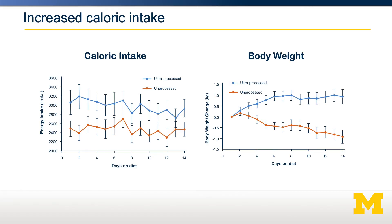We can make some projections, but until a longer-term study is done, we can't know for sure. The second limitation is that in this study, the protein and fiber content was well matched between the two diets — this was done to avoid confounding from those two factors that are important for satiety. However, if you compare this to real-world unprocessed and ultra-processed diets, as shown before, ultra-processed diets tend to be lower in fiber and protein. So in the real world, where those things are not well matched, the effect could be even bigger.